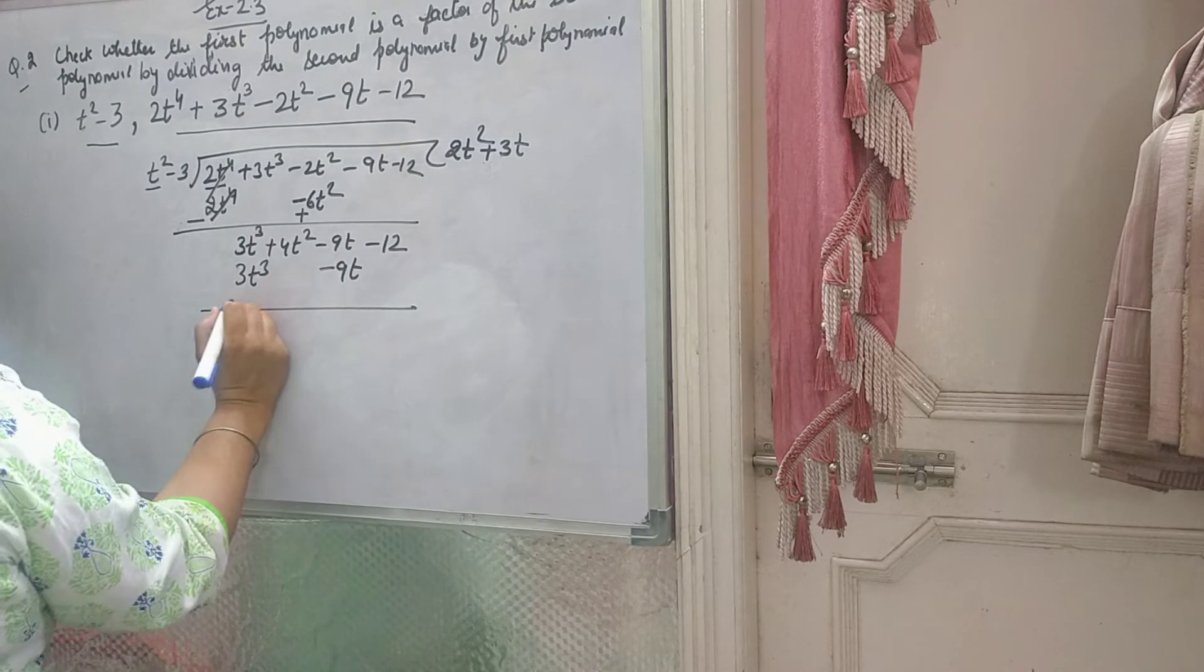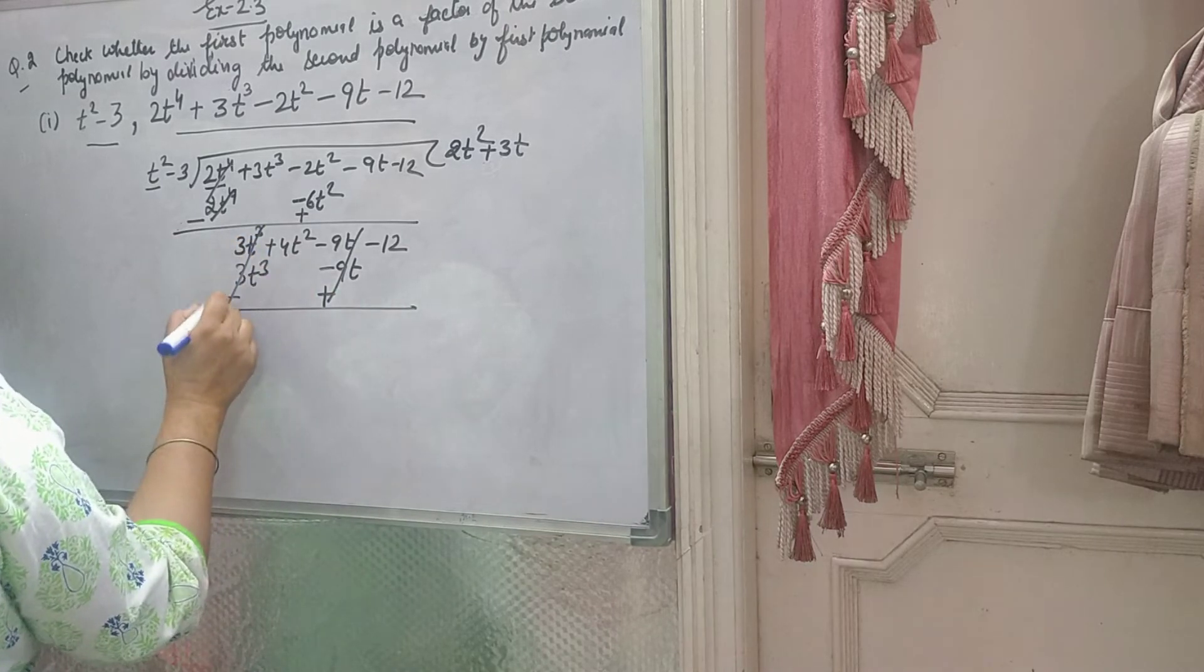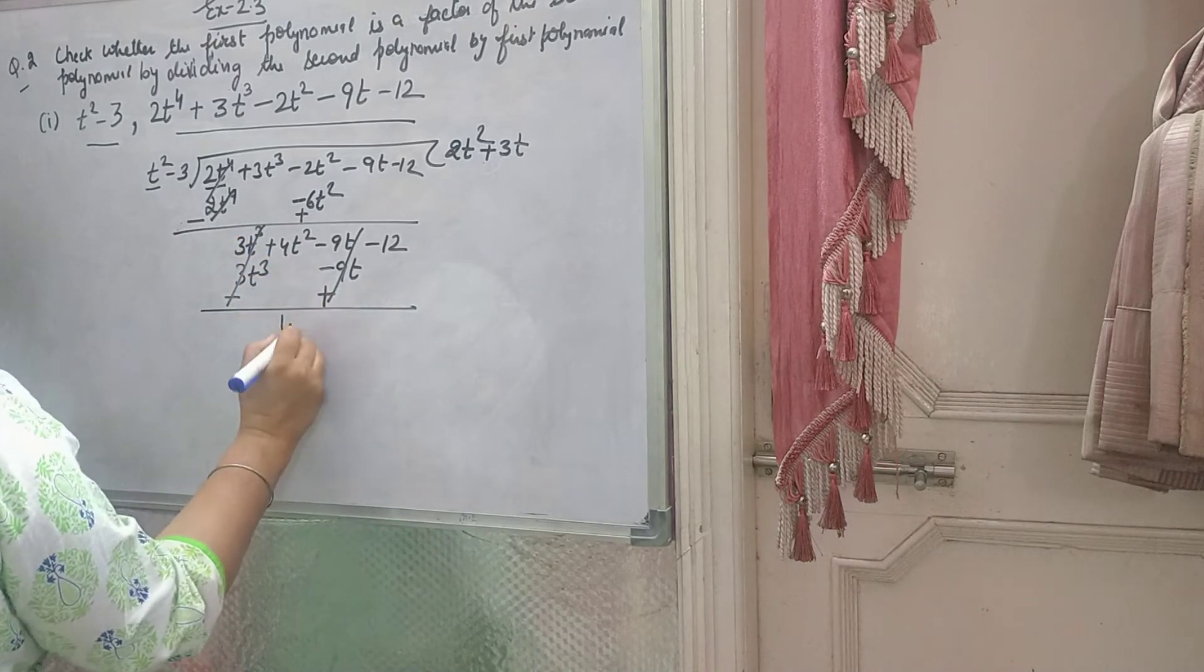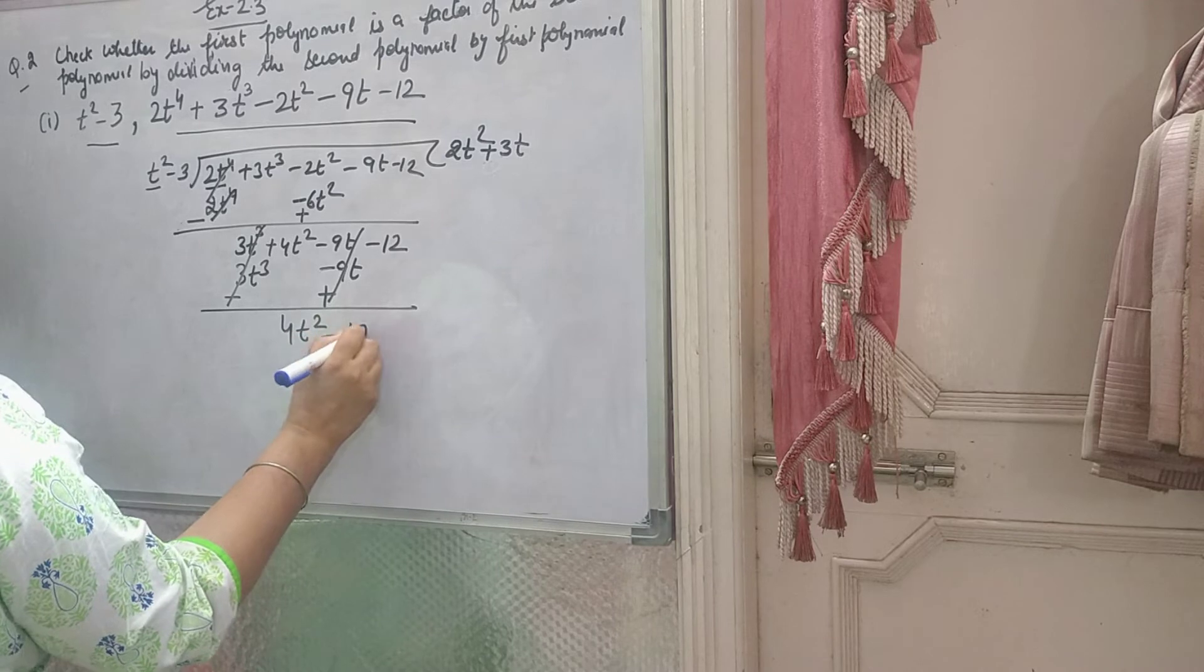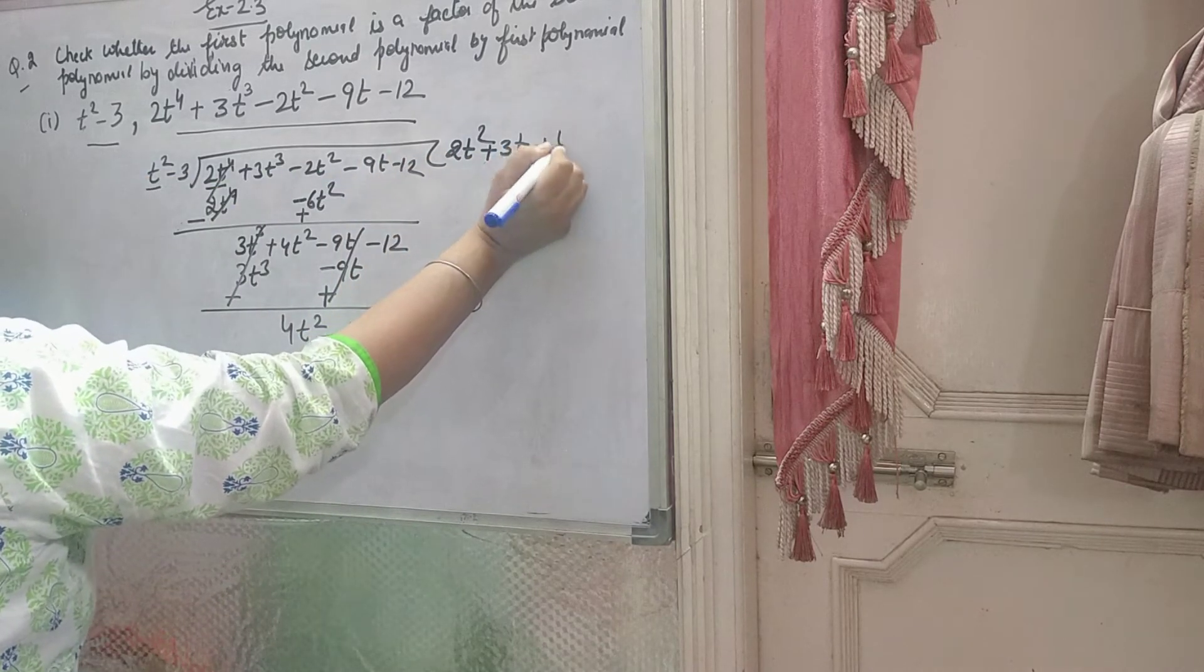Write t below t. Subtract, sign changes. This cancels, this cancels. They become 0. Write the remaining terms: 4t² minus 12. Now you need 4t², and here you have t². So obviously you will multiply by 4.